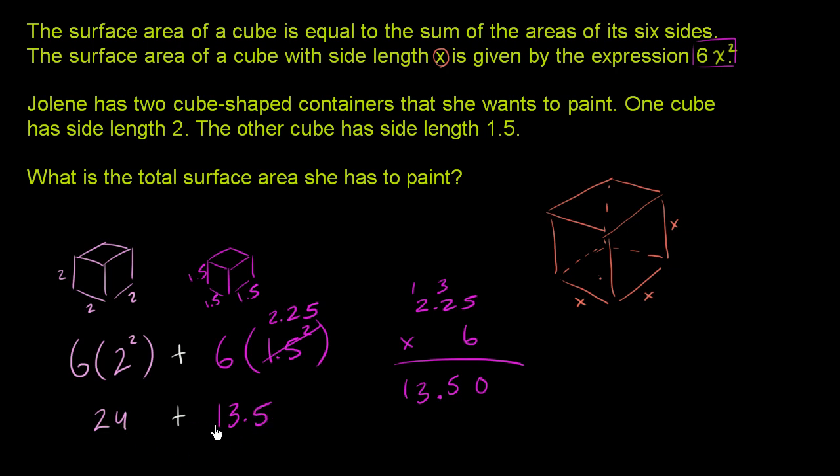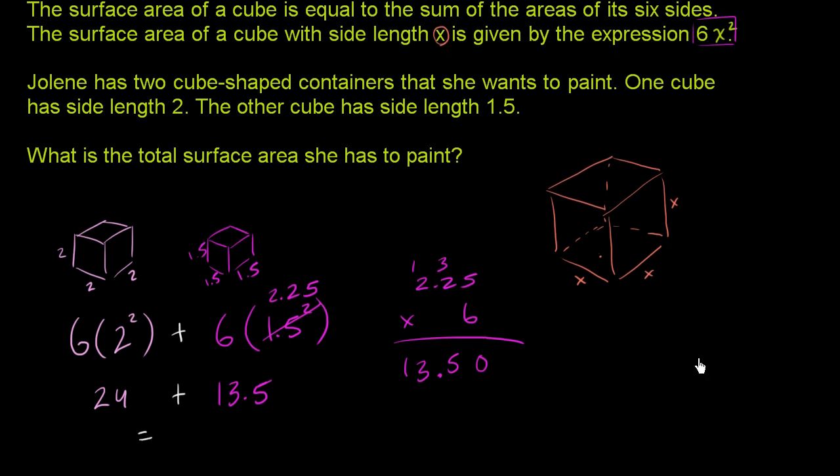And if I add these two together, this is going to be equal to the total surface area that she has got to paint is going to be 37.5 square. Well, I guess they're not giving us the units. Well, 37.5 is the total area of square units of whatever the units happen to be.